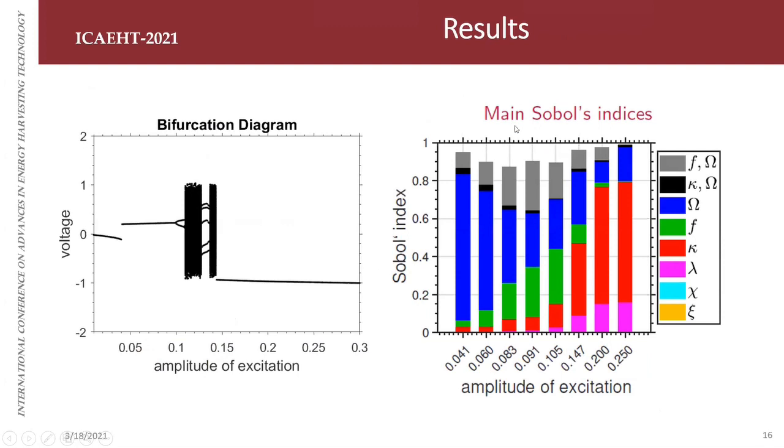On the right, we have the main Sobol indices. Here I plot just all first-order Sobol indices and just the main second-order Sobol indices. I evaluate for amplitude of excitation, and we can explore several behaviors with these parameters. Just for one amplitude of excitation, I plot all Sobol indices by stacked bar.